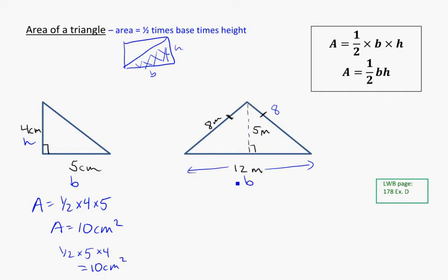Now, we know the base here is 12, obviously. But now we have to decide which of those two numbers is the height. And the height is always going to be the one that's perpendicular to the base. So in this case, we'll actually ignore the two 8's. They're not important.